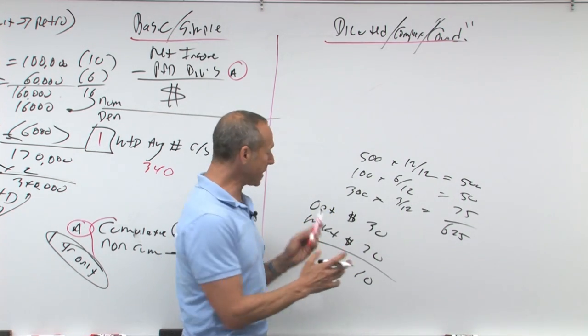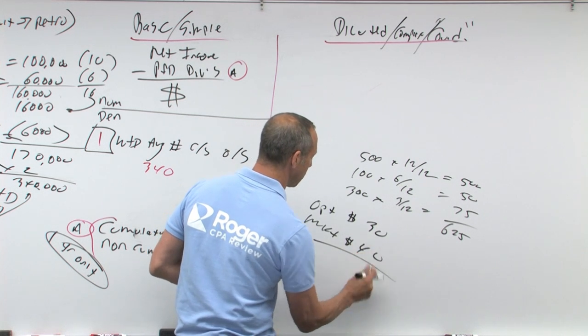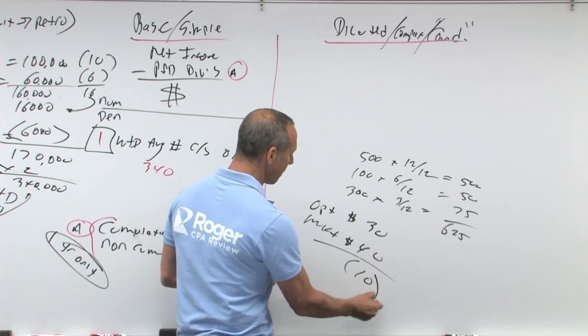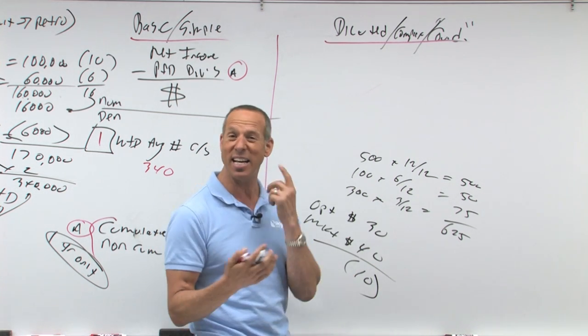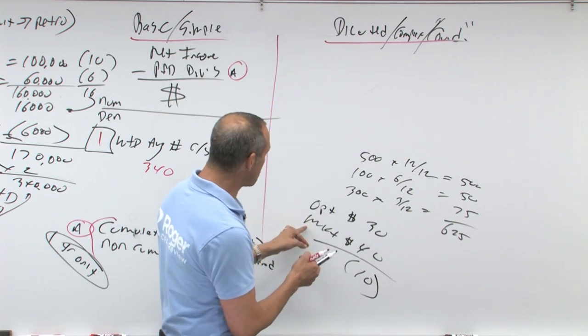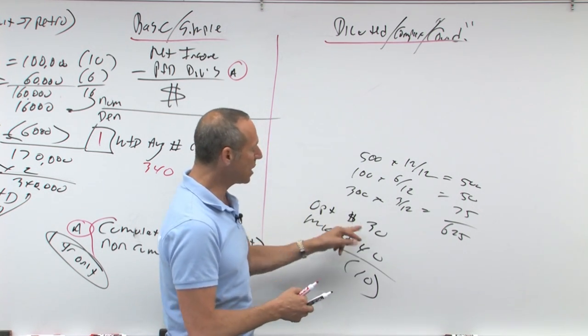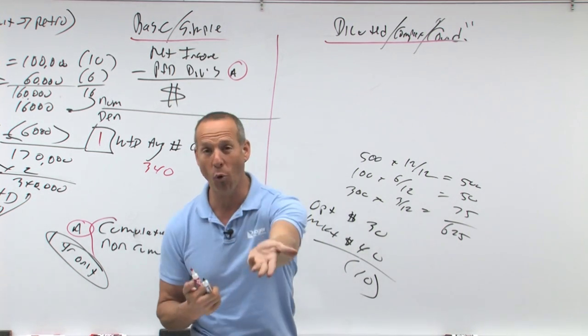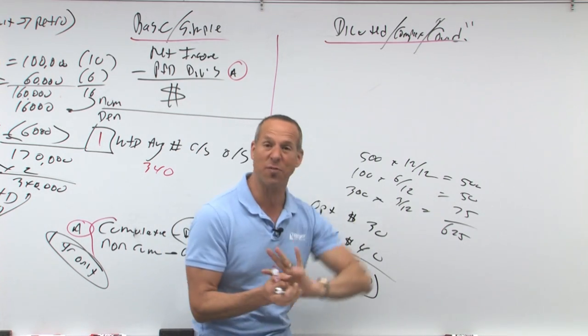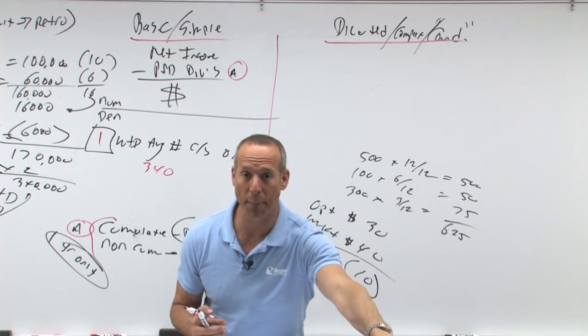But is it dilutive? Let's change the numbers. Let's say the market price is $40. If you convert, everyone gets $10 less. In this case because if you were to exercise this option, you would give me $30, I'd have to give you $40, that means I have $10 less for everybody else. That dilutes how much they get.